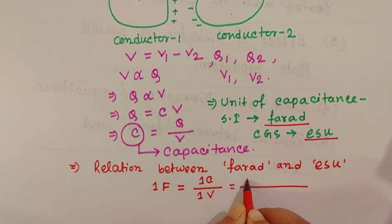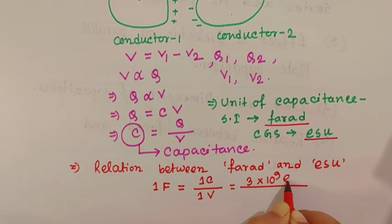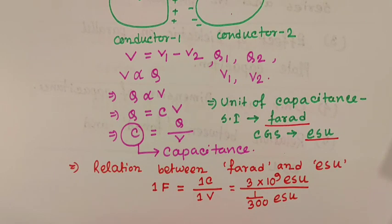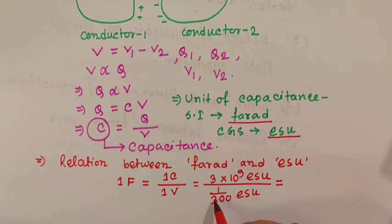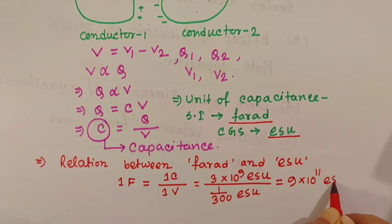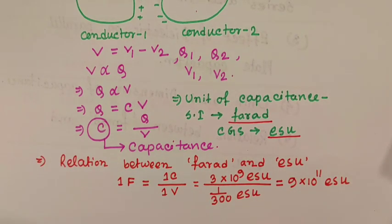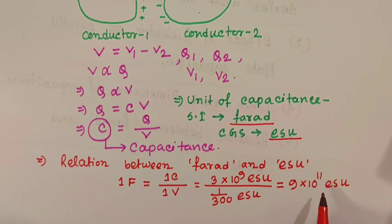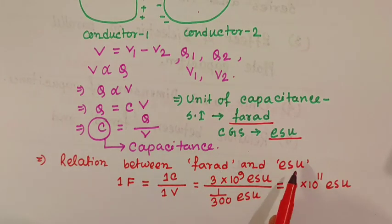So if we calculate this, we will get 9 × 10¹¹ ESU. So the relation is: 1 Farad equals 9 × 10¹¹ ESU. This is the relation between Farad and ESU.